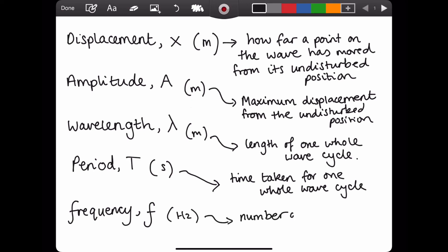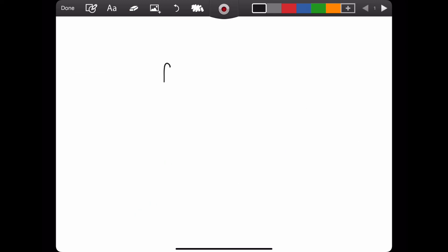Frequency, unit hertz, this is the number of wave cycles per second. An equation that you will need to be able to use and one that is given on your data sheets is frequency is 1 over time period.